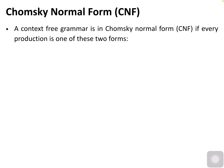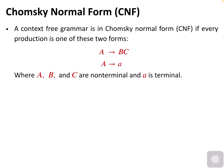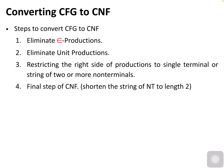A context-free grammar is in Chomsky Normal Form if every production is one of these two forms: A gives BC, or A gives a, where A, B, and C are non-terminals and a is a terminal symbol. The steps to convert CFG to CNF are: eliminate epsilon productions, eliminate unit productions, restrict the right side to a single terminal or a string of two or more non-terminals, and finally shorten the string of non-terminals to length two.